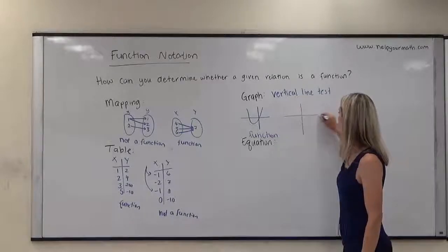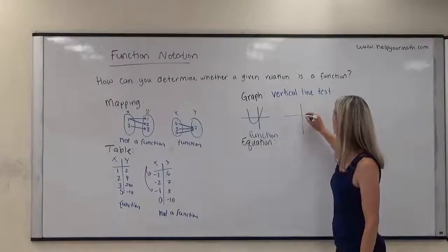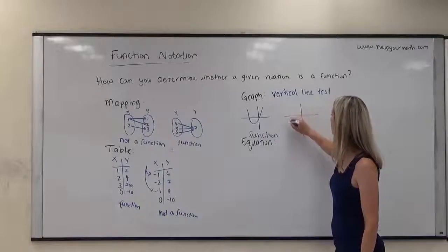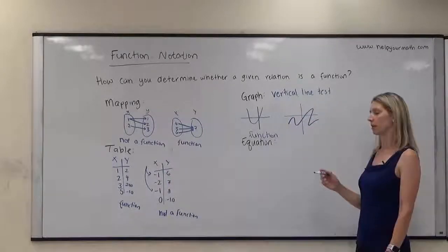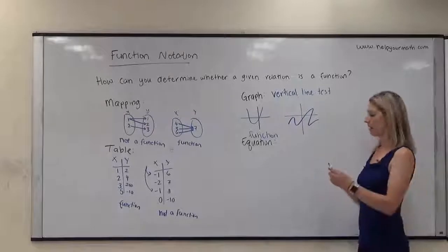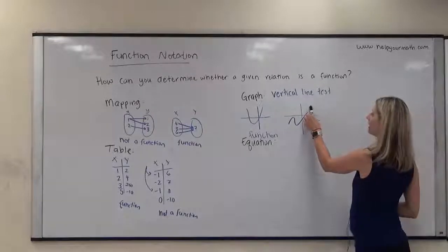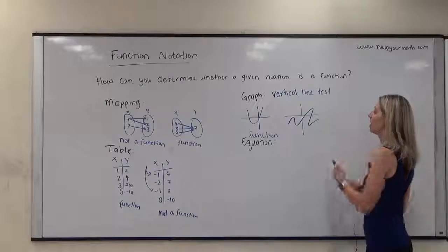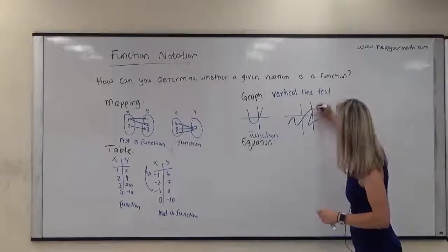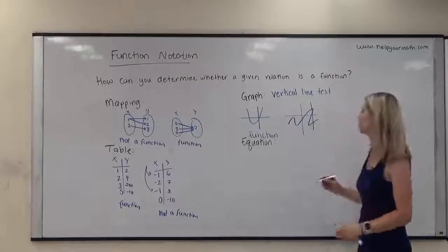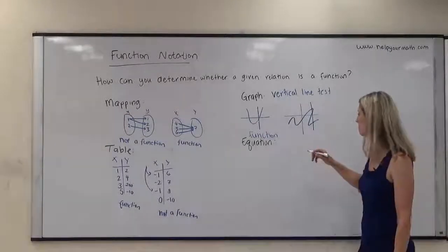If I have a graph like this — a wavy curve — and I look really carefully, if I draw a vertical line at a certain point, I'm going to hit the graph in more than one place. If I draw a vertical line here, I hit it in three different places. That indicates to me that this is not a function.